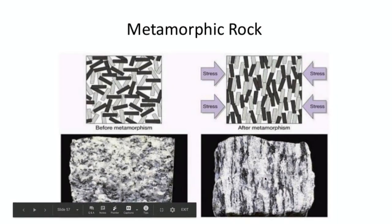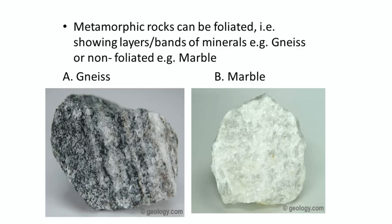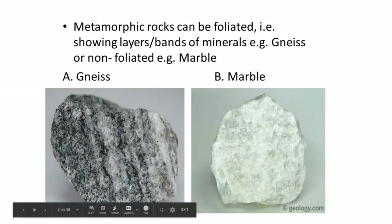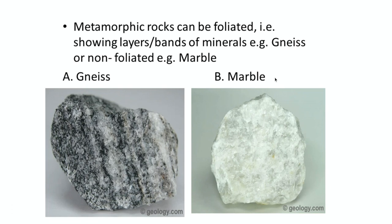Foliated metamorphic rock has these parallel stripes going on. Non-foliated is just the opposite — it's not going to have the parallel stripes. Here we have a rock called gneiss. The G is silent, so it's pronounced 'nice.' Gneiss is clearly foliated — you can see all the mineral grains are parallel to each other. Marble, on the other hand, is a non-foliated metamorphic rock. There's no parallelism to the mineral grains; it is just kind of still scattered.